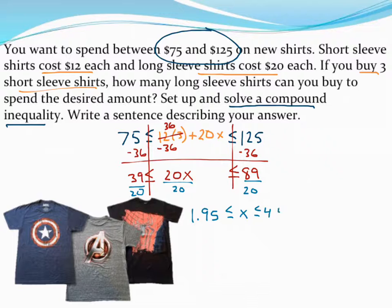I've gone ahead and done the math already. If you need to pause and double-check me, you can. But I find out that x, the number of t-shirts I can buy, I want to buy more than 1.95 shirts. But I want to buy less than 4.45 shirts.